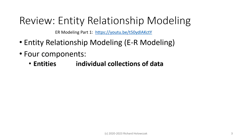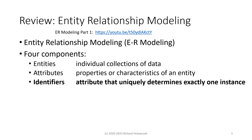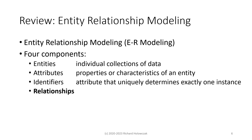Also in Part 1, we talked about the four components of the Entity Relationship Model, including entities, which are individual collections of data; attributes, which are the properties or characteristics of an entity; and identifiers, which is an attribute or attributes that uniquely determine exactly one instance of an entity. That's where Part 1 ended, and in this part we're going to talk about relationships. I strongly recommend that you review Part 1 so that you understand entities, attributes, and identifiers very well before continuing.